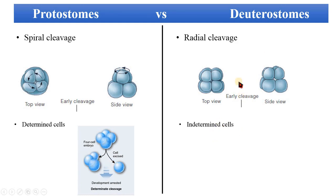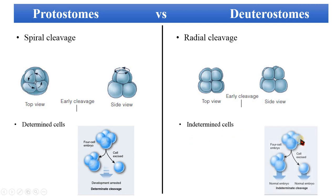In the case of deuterostomes, they have indeterminate cells. When each cell of the embryo has not yet been given a special function or a special structure to make, this is indetermination of cells. So if we cut a cell or a group of cells from the embryo, both parts will continue further development and can each make a new individual — this is what we call identical twins.